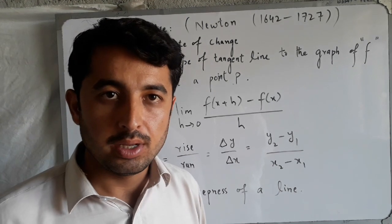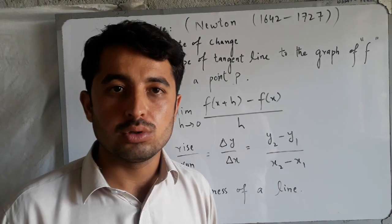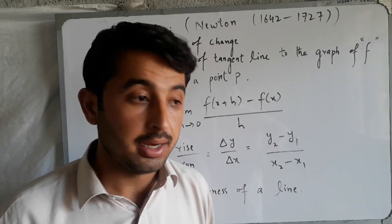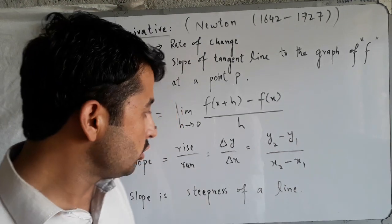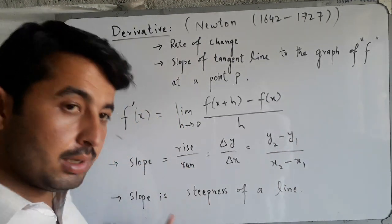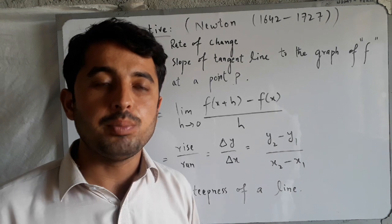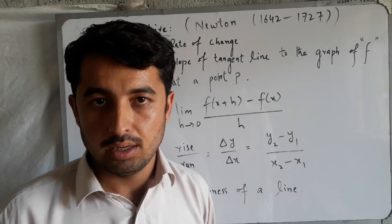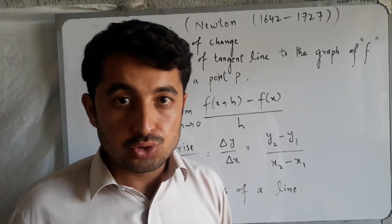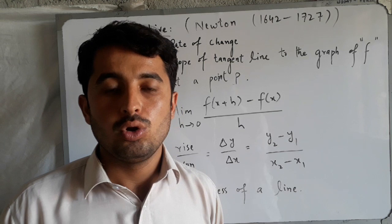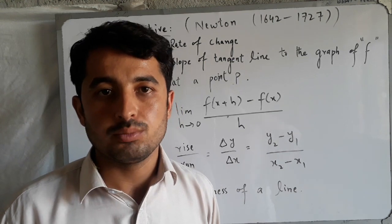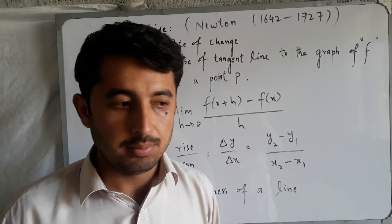Here we talked about the slope of the tangent line — so what is slope? Slope kya hai? Mathematical form mein, jaise humne pehle video mein bhi kaha tha, yeh steepness of the line hai — chahe woh secant line ho ya tangent line ho, uski jo steepness hoti hai use hum slope kehte hain mathematically.